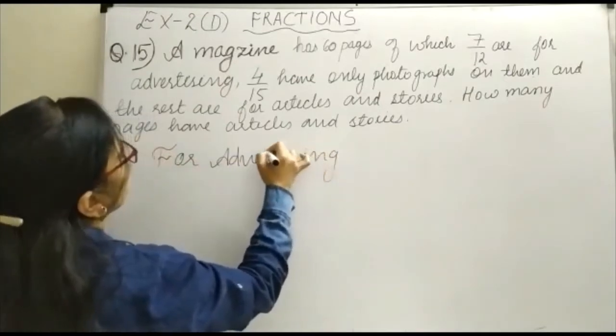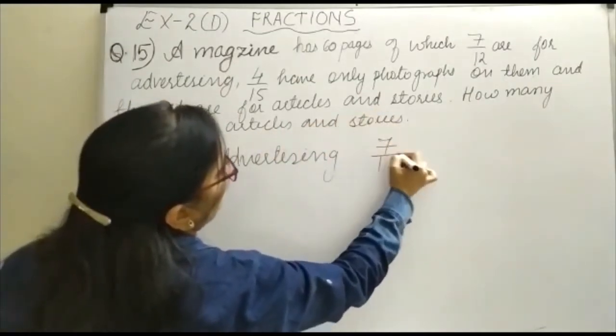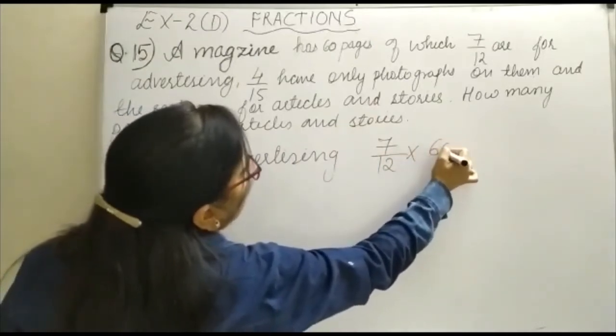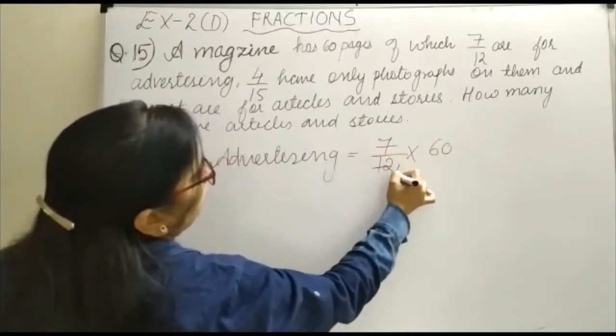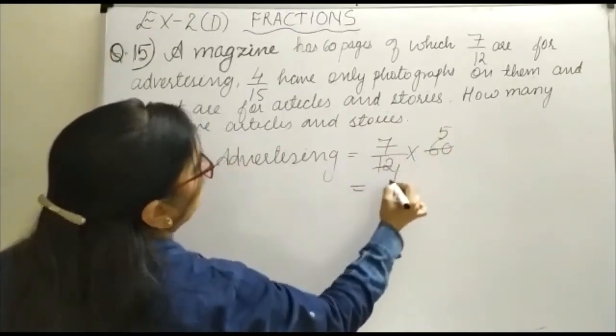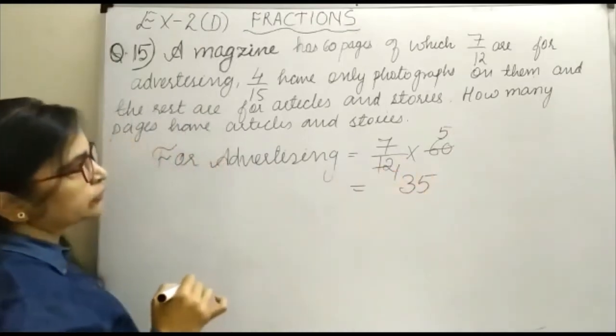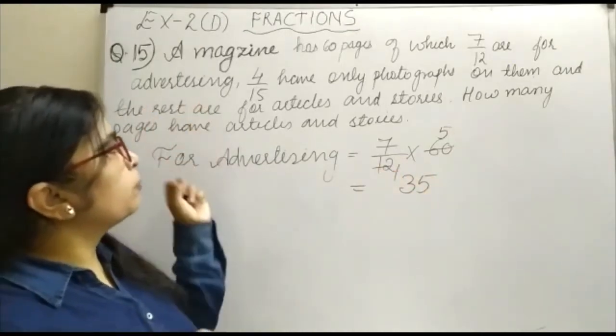Advertising we are having 7 upon 12, so 7 upon 12 into total pages that is 60. So 12 ones are 12, fives, so how many pages are for your advertising? That is 35. Now 4 upon 12 have only photographs on them.